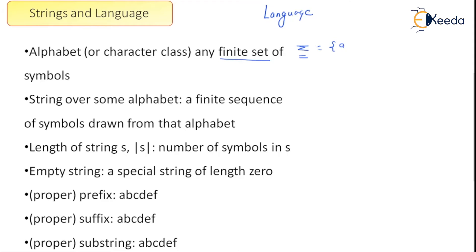Then we define a string over the alphabet, which is a finite sequence of symbols drawn from the alphabet. For example, 'aabb' is one such string — we take symbols from the alphabet and arrange them in a finite sequence. The length of the string is the number of symbols it contains. For 'aabb', the length is equal to four.